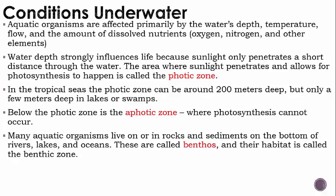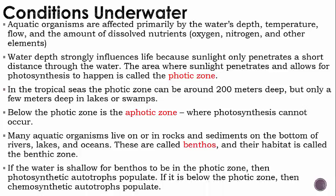Many aquatic organisms live on or in rocks and sediments on the bottom of rivers, lakes, and oceans. We call these aquatic organisms benthos, and their habitat is called the benthic zone. If the water is shallow enough for benthos to be in the photic zone, then photosynthetic autotrophs populate. If it's below the photic zone, then chemosynthetic autotrophs populate.